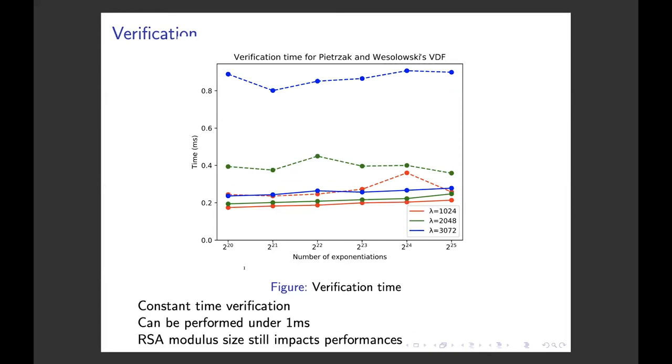Concerning verification, we have a very nice property: the verification is constant time. Wesolowski is the dotted line, Pietrzak is the solid line. We can see it can be performed under one millisecond, so VDF should not be a bottleneck for transaction verification. The constant time is very important because you can increase or decrease difficulty without worrying about impact on the bottleneck of transactions.